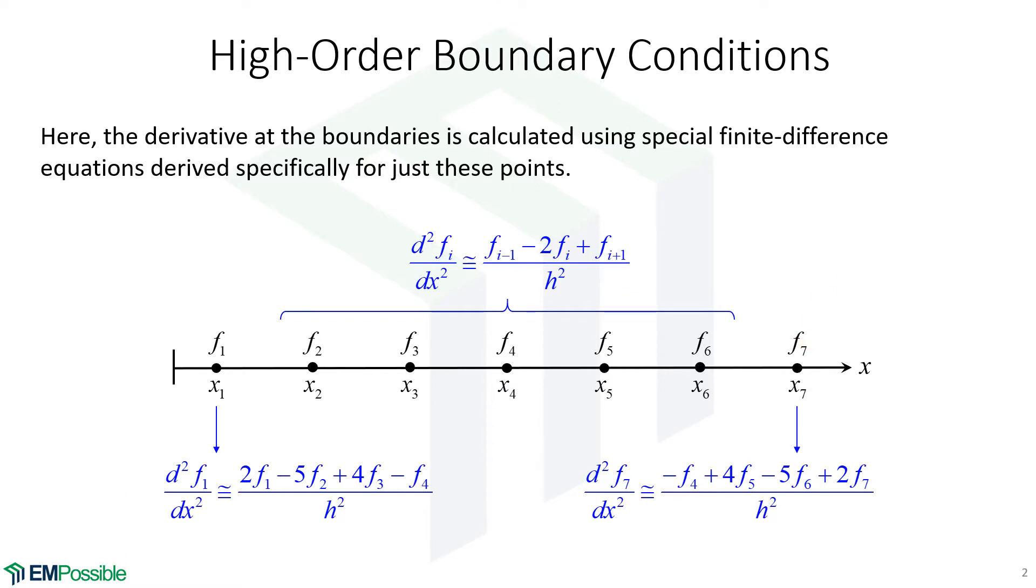I would call this a higher order boundary condition. The reason that I chose four points here is if we chose three points, it would have been the same finite difference as the second order derivative at this point. And so since we're at the edge of the grid, we don't have information from out here. We're already suffering a little bit for accuracy. So let's actually calculate it from four points and maybe that'll help a little bit.